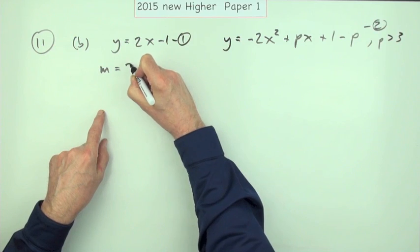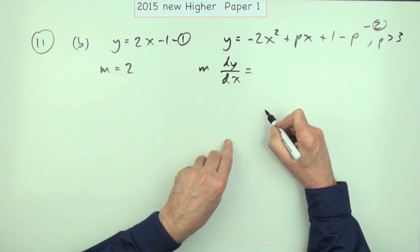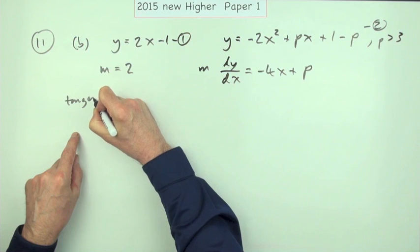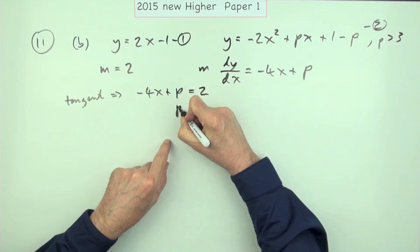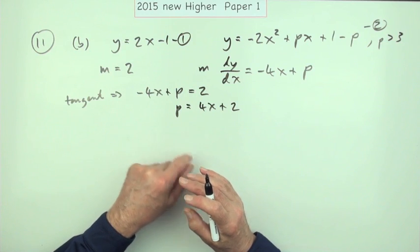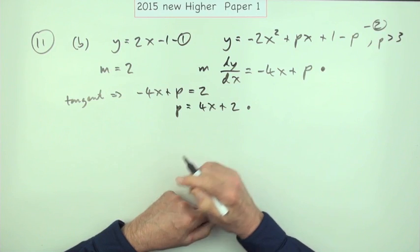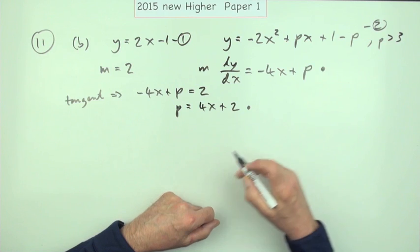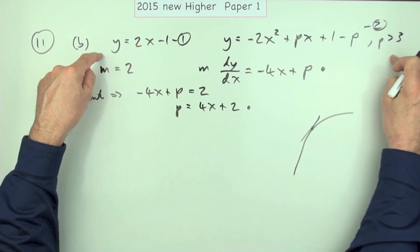From the tangent equation, the gradient of the line is 2. The gradient of the parabola is given by its derivative: negative 4x plus p. If it's a tangent, then negative 4x plus p should equal 2, or rearranging, p equals 4x plus 2. That's not a final answer for p yet, since not all conditions are fulfilled. Differentiating was one mark, and equating the gradients was another mark. The next step is to find a point of intersection — they must share the same point.